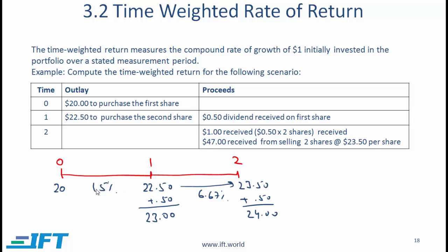To compute the time-weighted rate of return, we need to see what happens to a dollar invested at time 0. The investment at time 0 is $20. At the end of the first year the stock has gone up to $22.50 plus there is a dividend of $0.50, meaning we received a return of 15%. So $20 essentially becomes $23, and a dollar invested has now effectively become $1.15 at the end of one period.